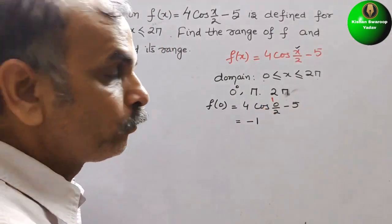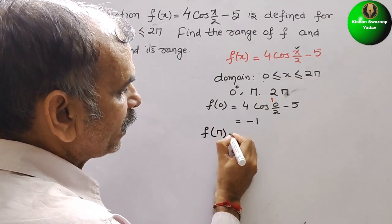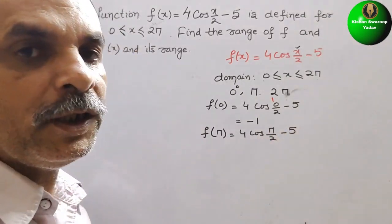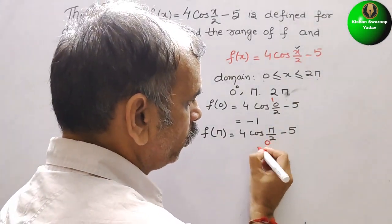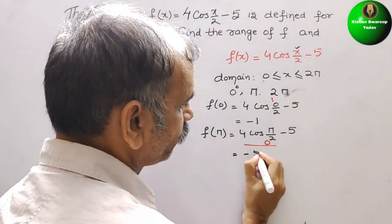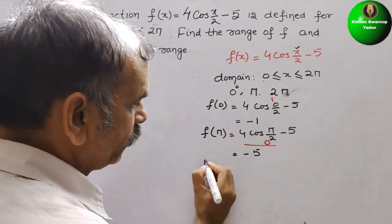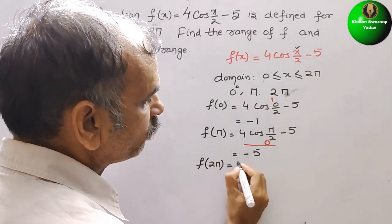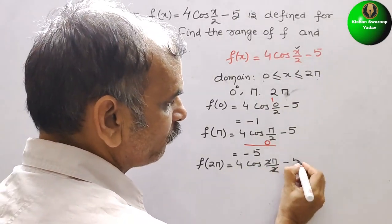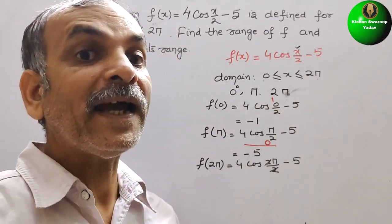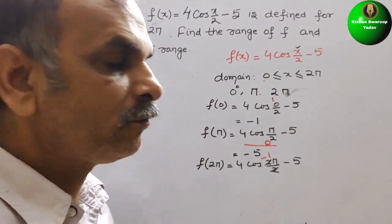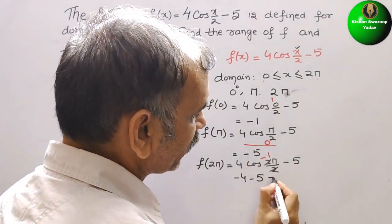Next we replace x with π. So f(π) is equal to 4cos(π/2) minus 5. cos(π/2) is 0, so 4 times 0 minus 5 gives us minus 5. Then for x equals 2π, we get f(2π) equal to 4cos(2π/2) minus 5, which is 4cos(π) minus 5. cos(π) is minus 1, so minus 4 minus 5 equals minus 9.